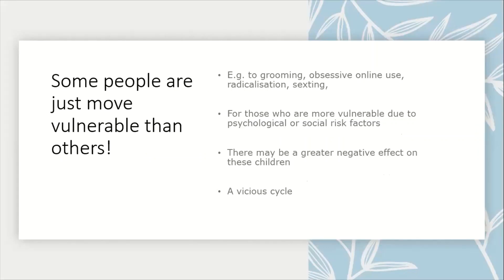Some children are simply more vulnerable than others — more vulnerable to grooming, obsessive online use, radicalisation and sexting — due to underlying psychological and social risk factors. There may be a greater negative effect on these more vulnerable children, and this vicious cycle can develop.